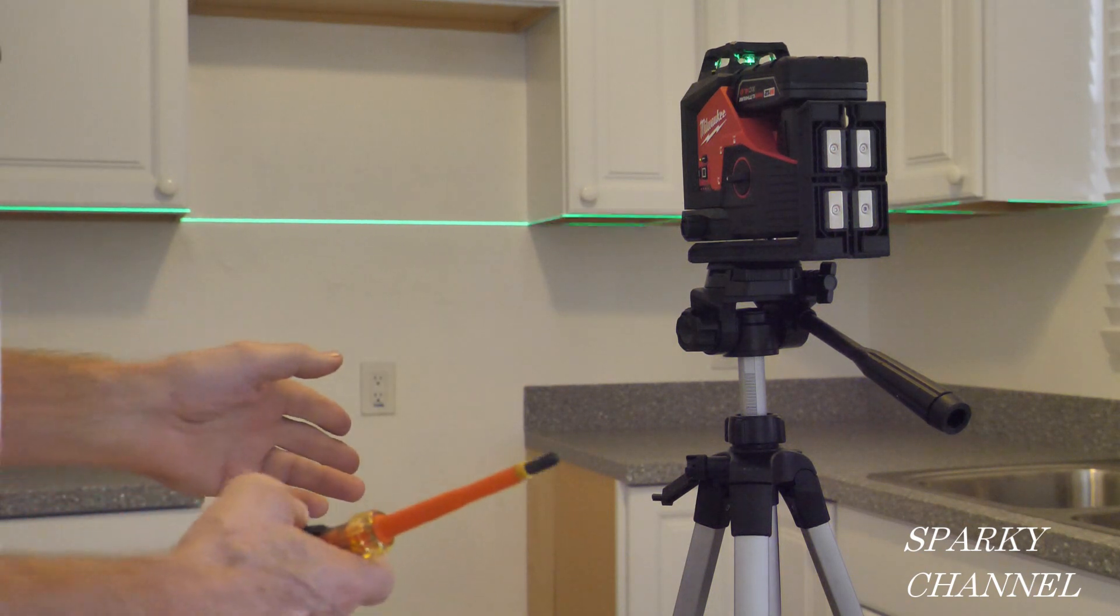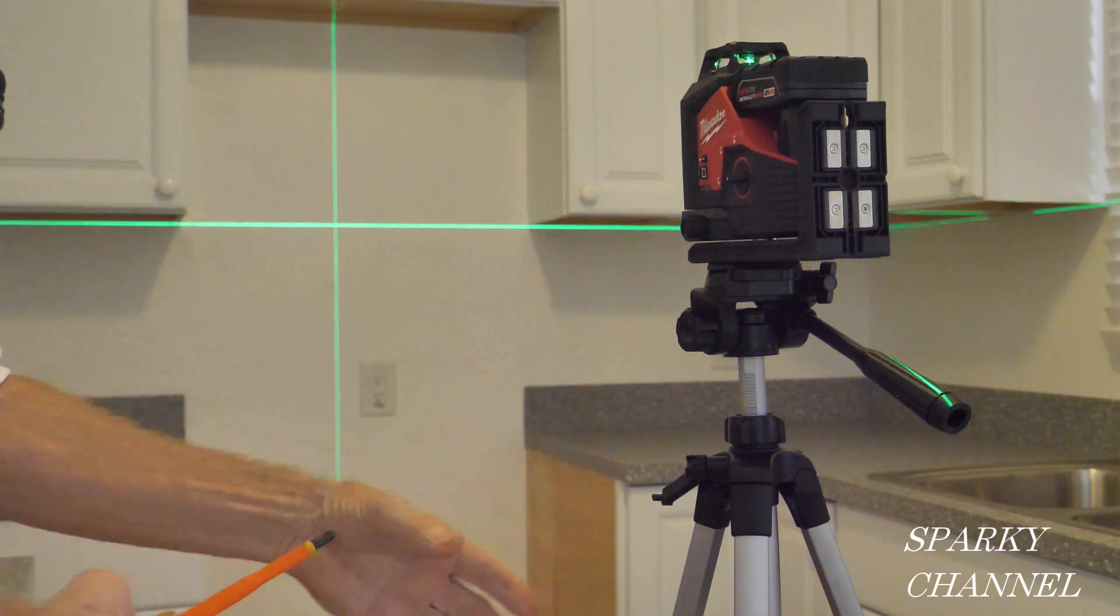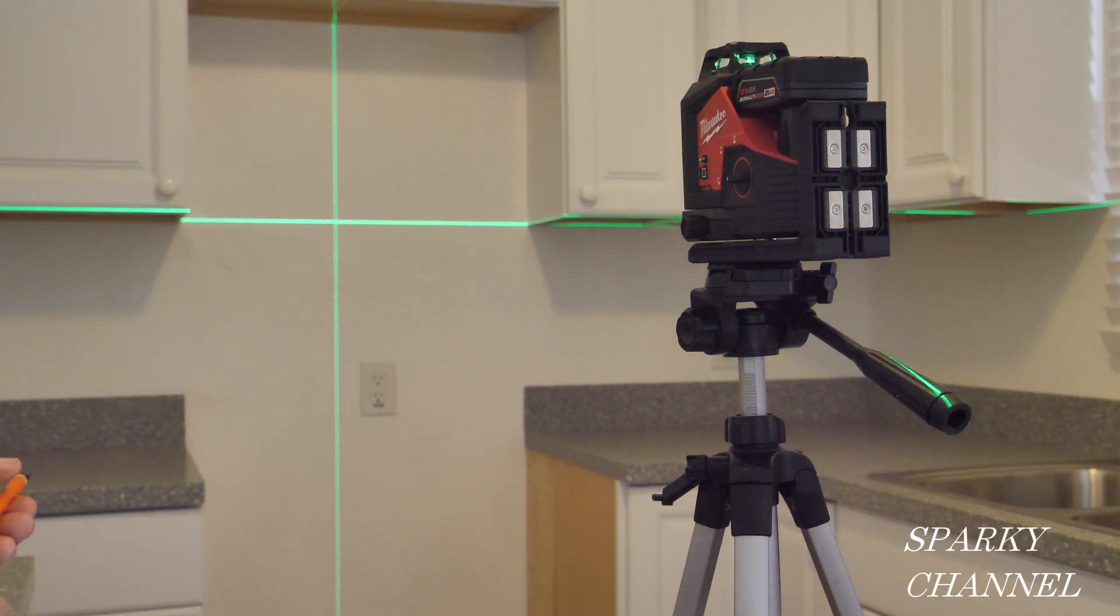Now to move it from side to side I'm going to do a vertical line right here, there we go. Let's say that we would like to put the vertical laser line on the left edge of the receptacle cover.